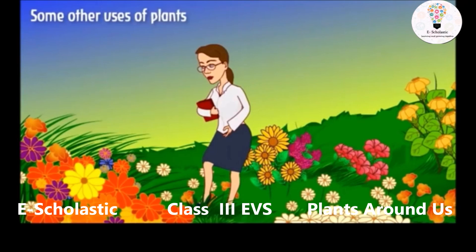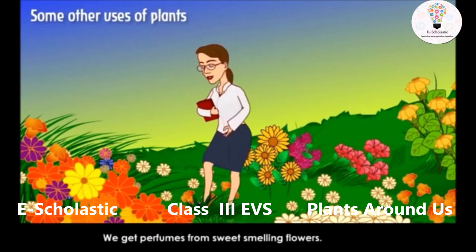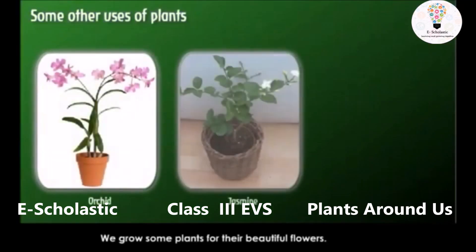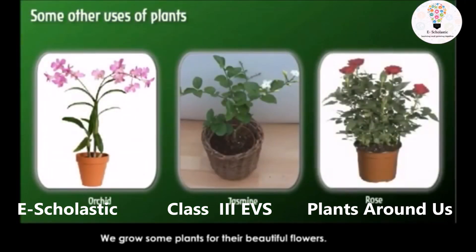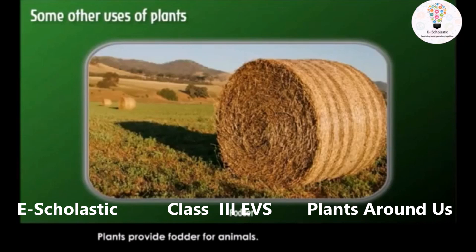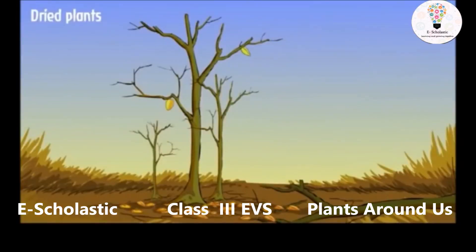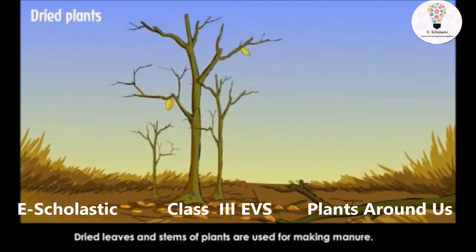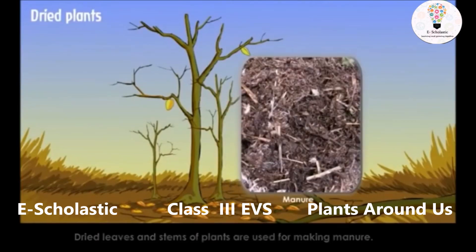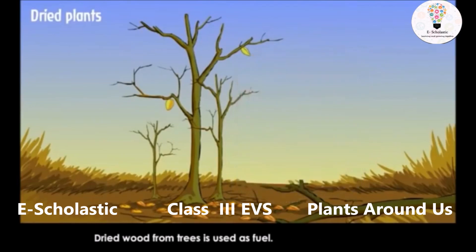We get perfumes from sweet-smelling flowers. We grow some plants for their beautiful flowers. Plants provide fodder for animals. Plants make the world green and beautiful. Dried leaves and stems of plants are used for making manure. Dried wood from trees is used as fuel.